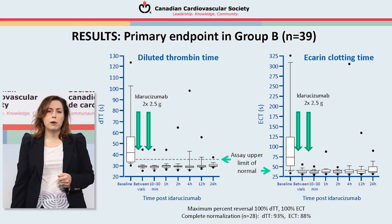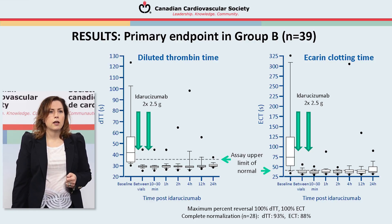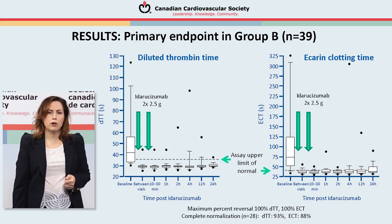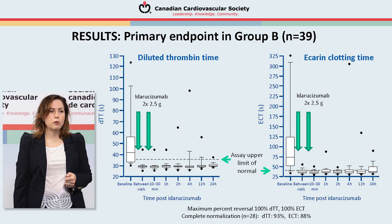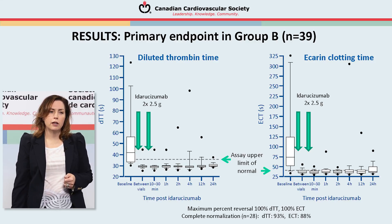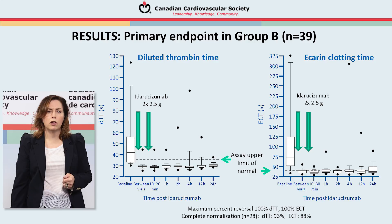Similarly in the Group B patients — those who required an urgent procedure or surgical intervention — out of the 31 patients enrolled, 28 had elevated dilute thrombin time at enrollment and 34 had elevated ecarin clotting time at enrollment. Similar to Group A, there was 100 percent maximum reversal and complete normalization in 93 percent of patients according to dilute thrombin time and 88 percent of patients according to ecarin clotting time.